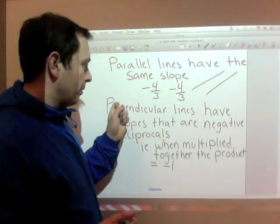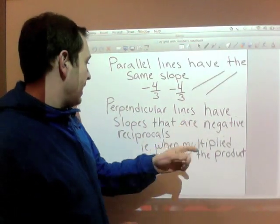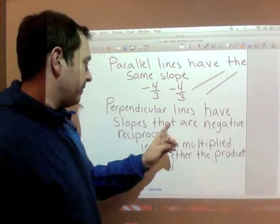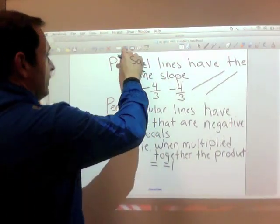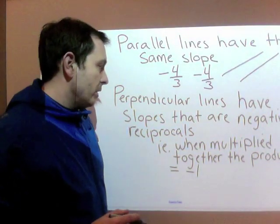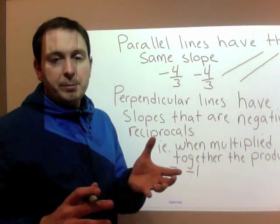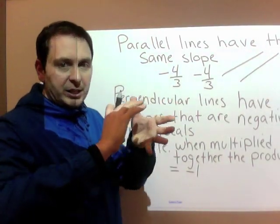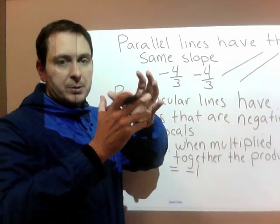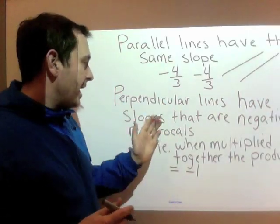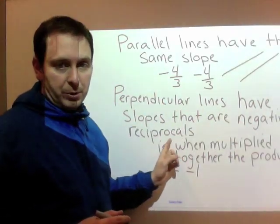The next one's a little more difficult. Perpendicular lines have slopes that are negative reciprocals. Reciprocal basically means when you take a fraction and it flips. The denominator becomes the new numerator and vice versa. And also negative reciprocals.